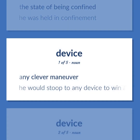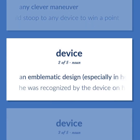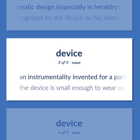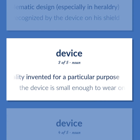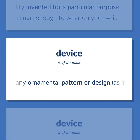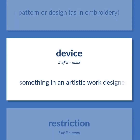Device: Any clever maneuver — he would stoop to any device to win a point. An emblematic design, especially in heraldry — he was recognized by the device on his shield. An instrumentality invented for a particular purpose — the device is small enough to wear on your wrist. Any ornamental pattern or design, as in embroidery.